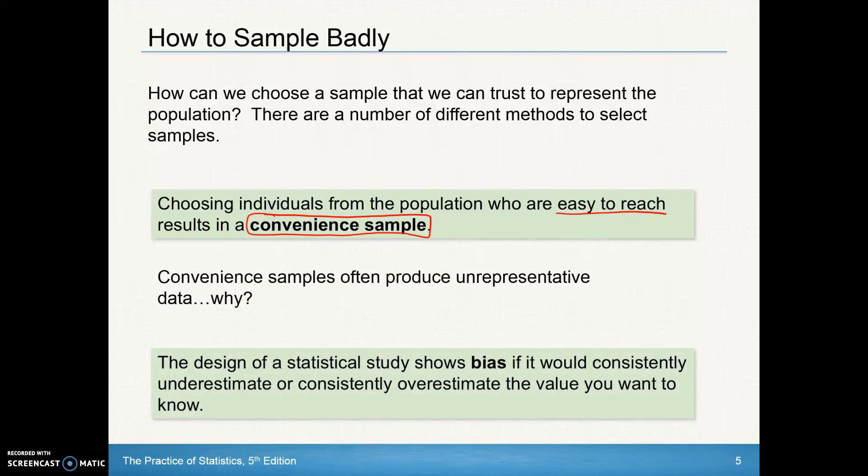So why? Well, the design of a statistical study shows bias if it would consistently underestimate or consistently overestimate the value you want to know. If I was asking kids about the value of an AP class, and I just asked the AP statistics class, I'd probably get an overestimate of the value of an AP class.